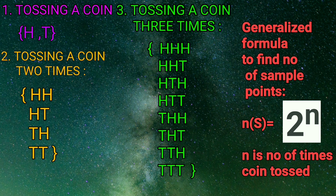We have a generalized formula to find the number of sample points for a coin: n(S) = 2^n, where n is the number of times a coin is tossed. For example, if a coin is tossed three times, this is 2^3 = 8 outcomes. Similarly, for four coins it is 2^4 = 16 outcomes.